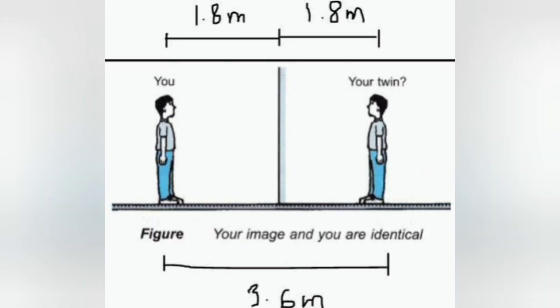Third point. The image is of same size as that of the object. And the fourth point is the image is erect. That is, the image is upright.